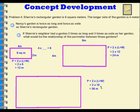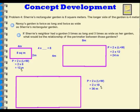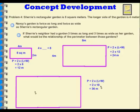Now let's take a look at the relationship between these perimeters. Sherry's rectangular garden had a perimeter of 12 meters. Nancy's was 2 times as large, so the perimeter is 2 times Sherry's — it goes from 12 to 24. The neighbor's was 3 times as large, so if Sherry's perimeter is 12, 12 times 3 is 36.